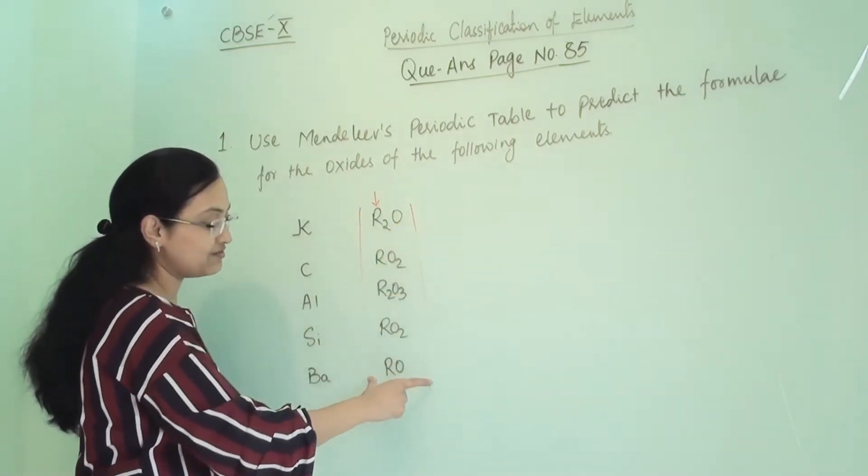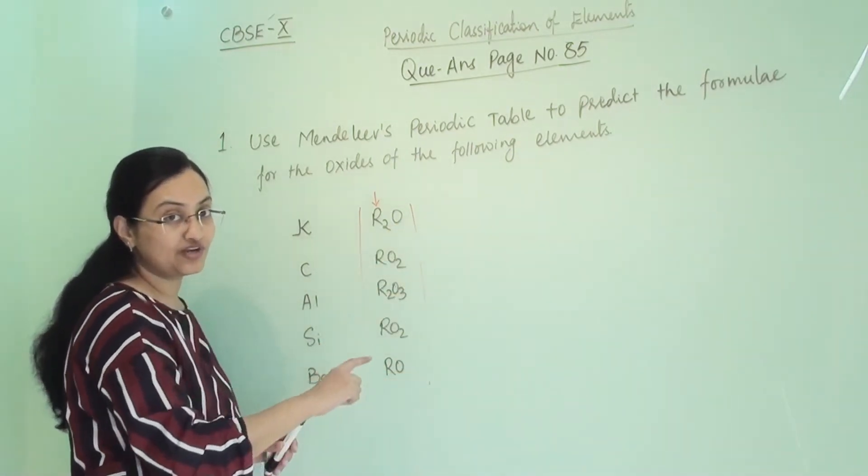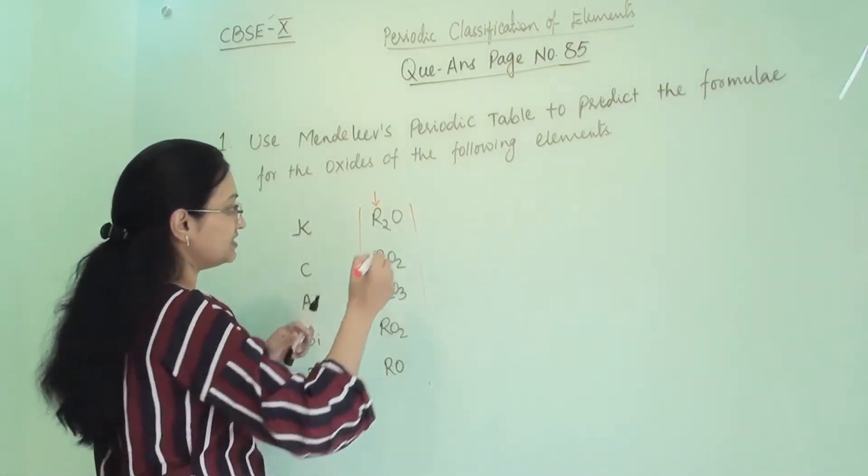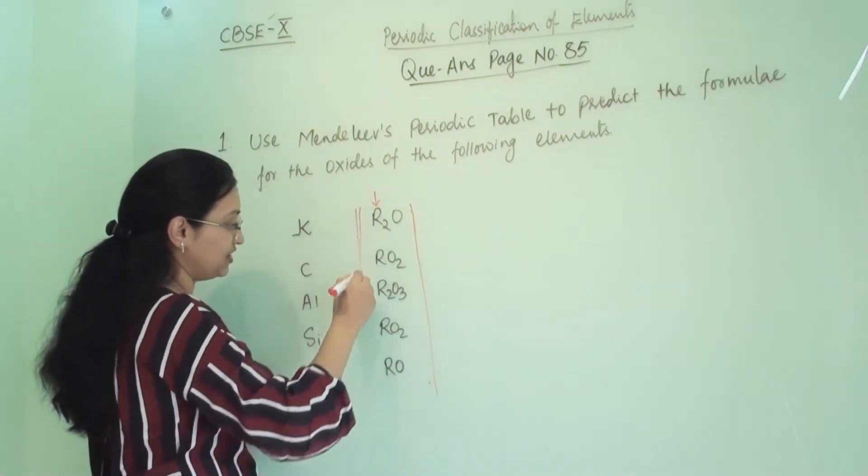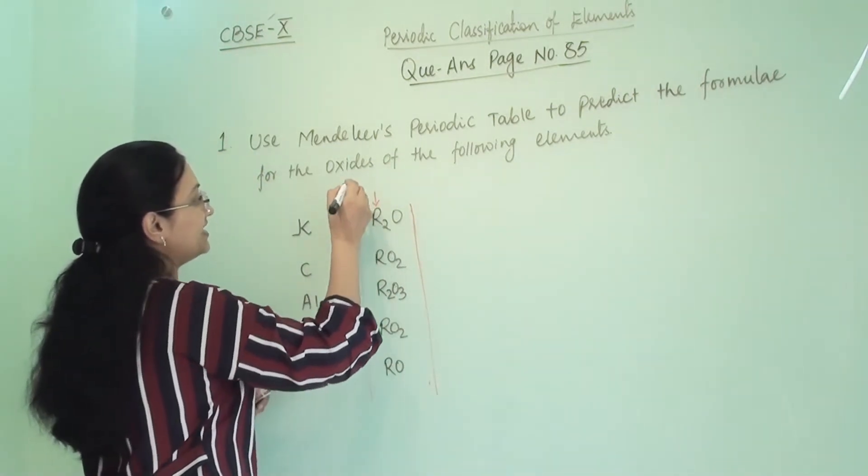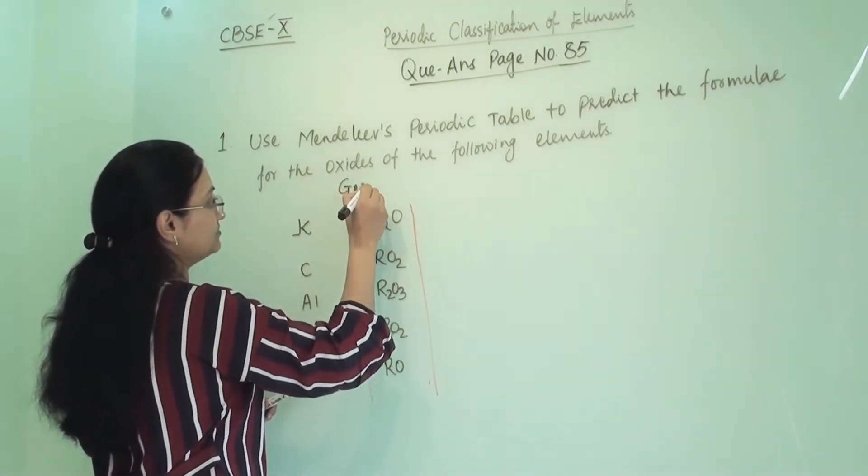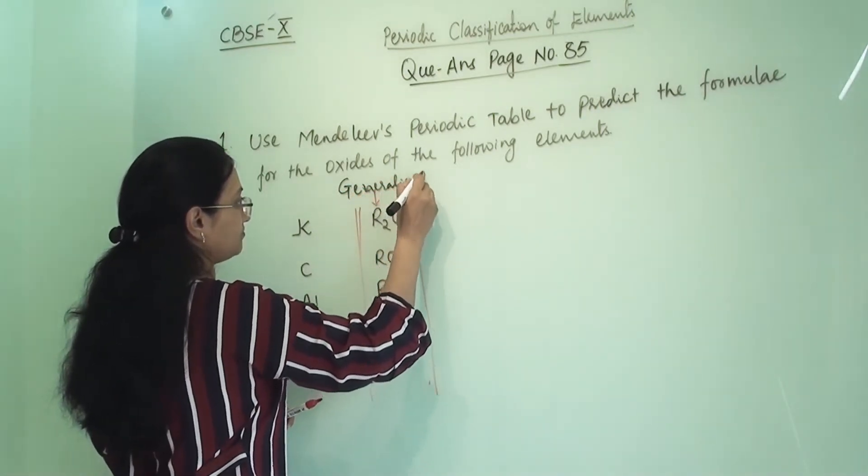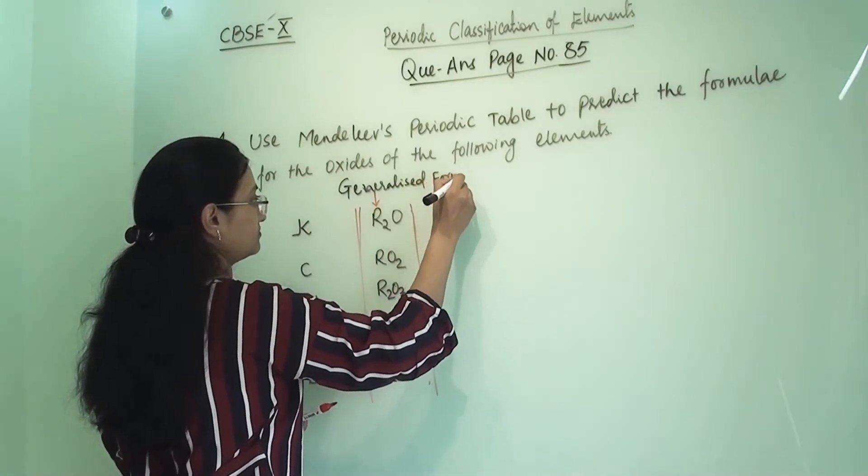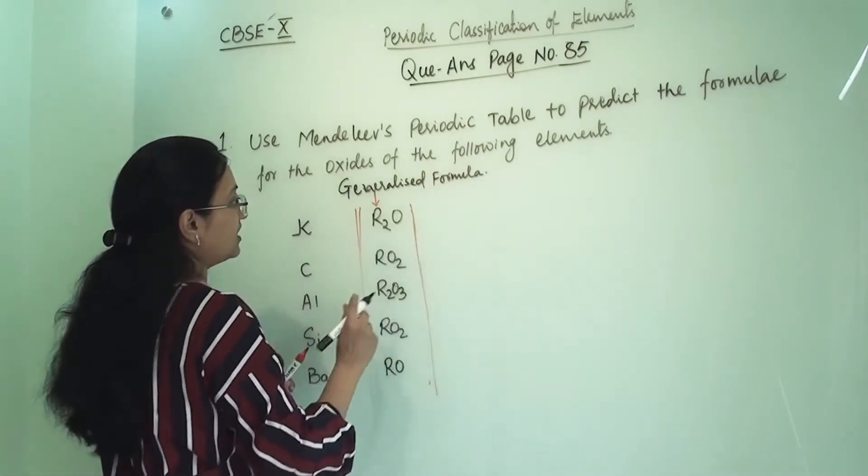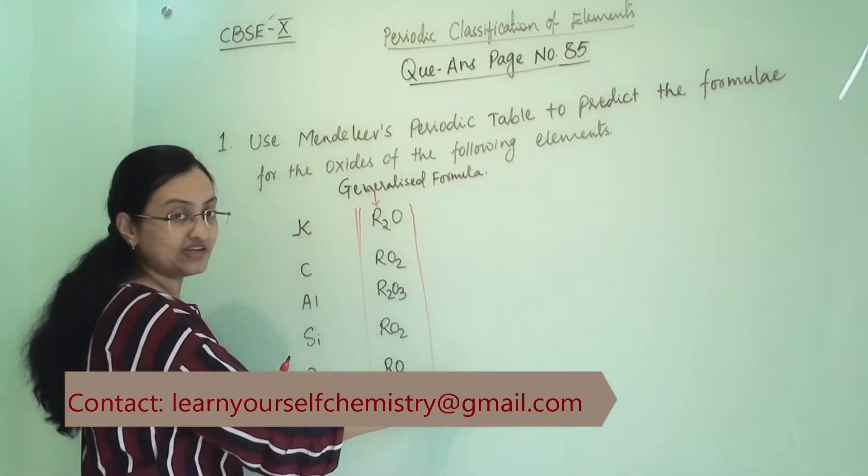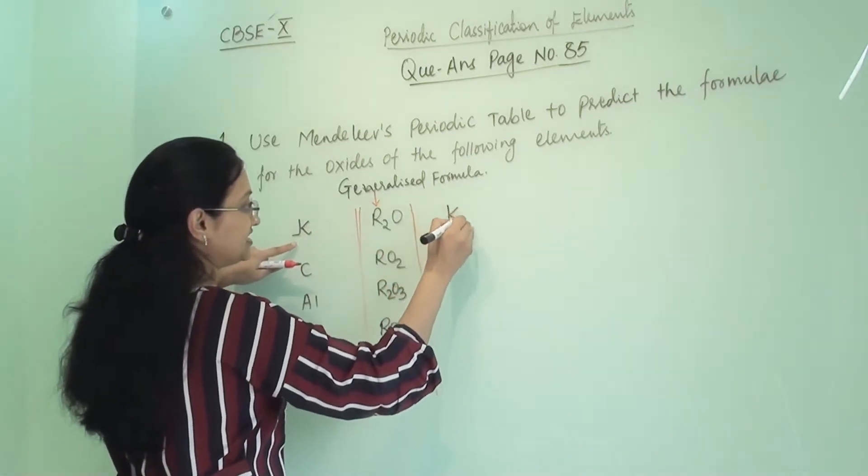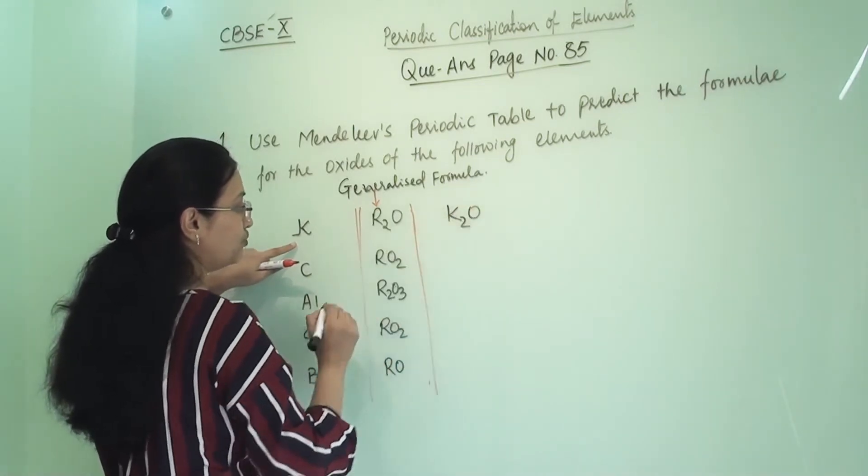Now if we will not see this, then also we can write from this, but let us derive from Mendeleev's periodic table because that's what they have asked us. So here this is the generalized molecular formula. You can write here the generalized formula, and here we will write the oxide formula. So R is our element, so we will write here K, and R2O is there, so it is K2O.